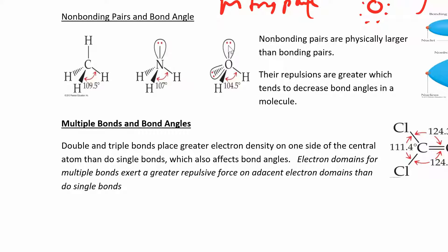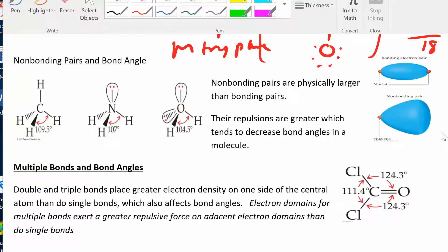If I replace another bonding electron domain with a non-bonding electron domain, it compresses the angle even more. The lone pair electrons take up so much more space that they repel each other a lot more. The bonding electrons are localized between those two atoms and don't take up as much space, while the non-bonding electrons take up a lot more space.